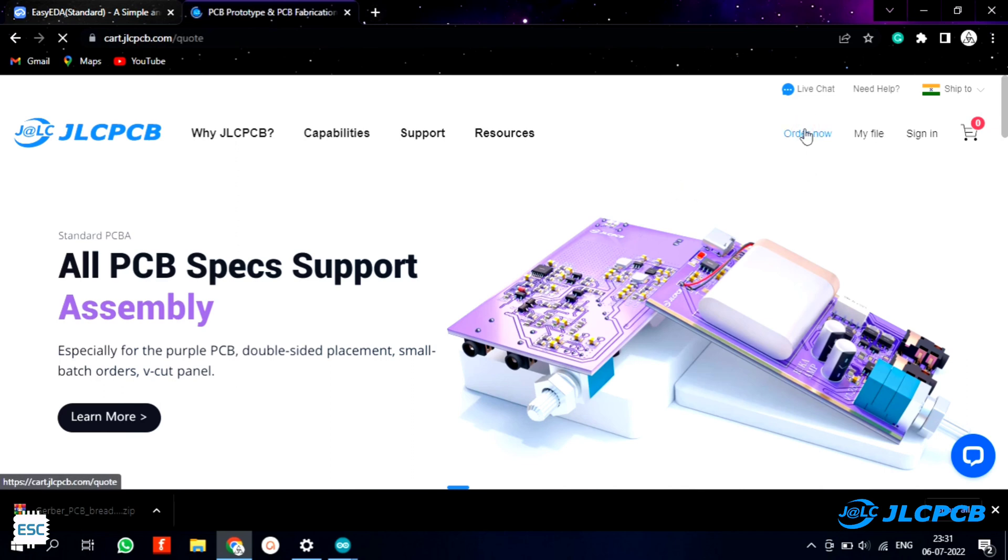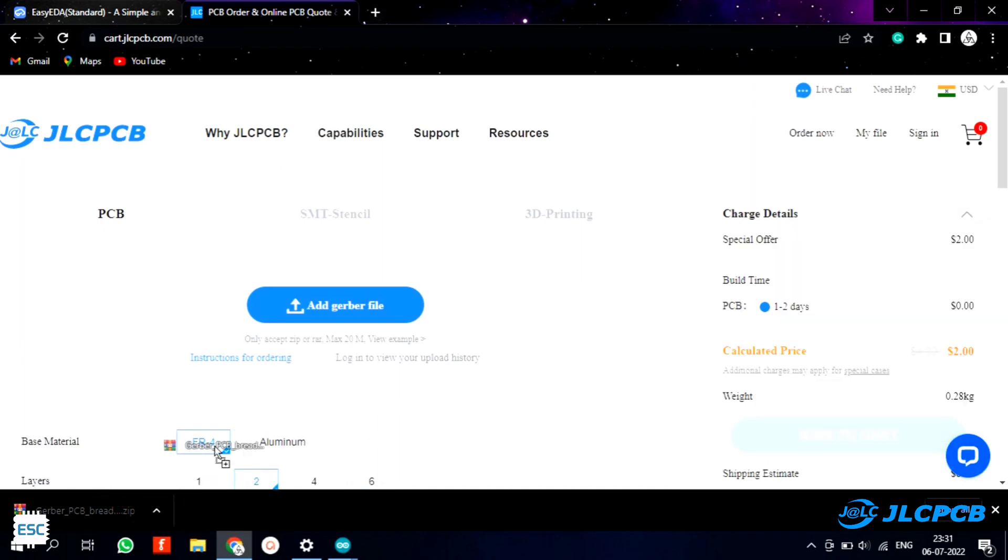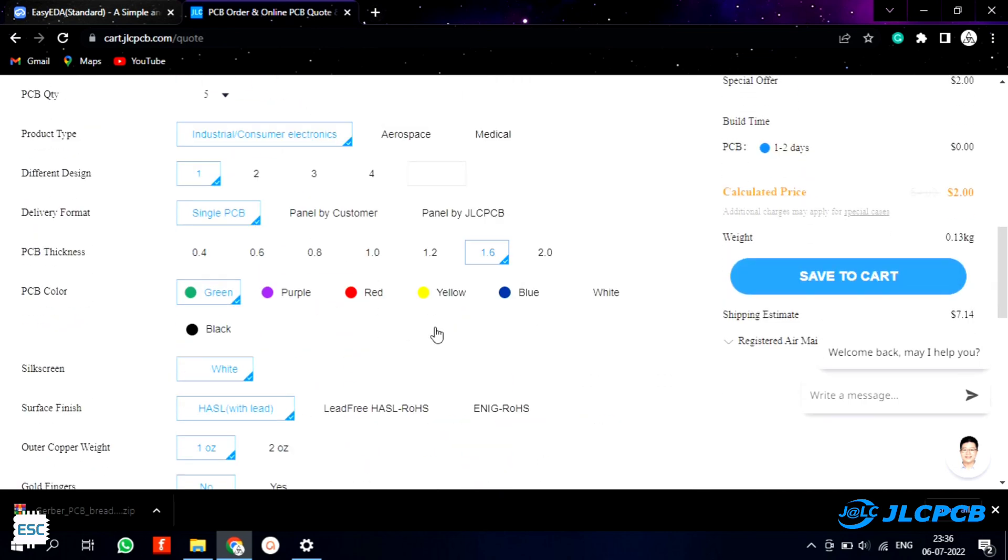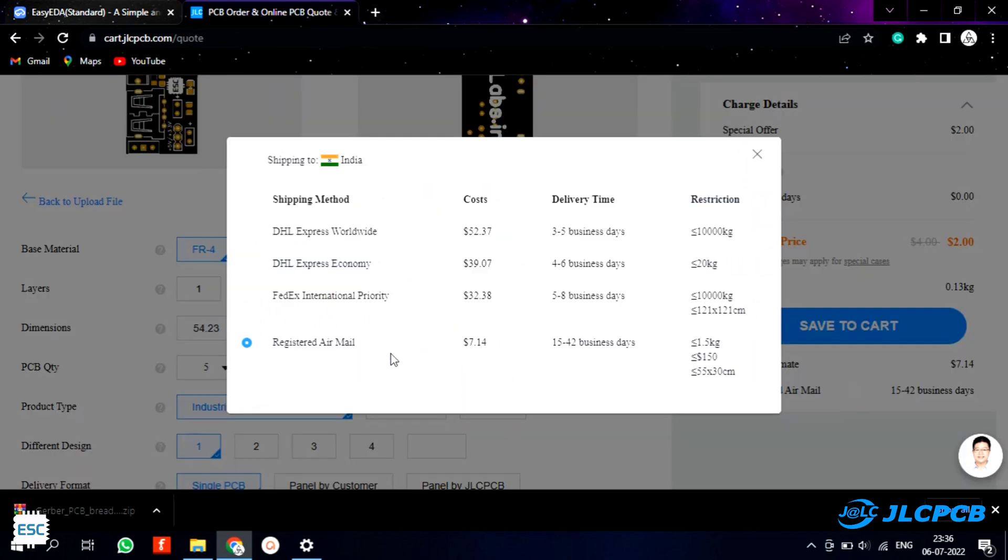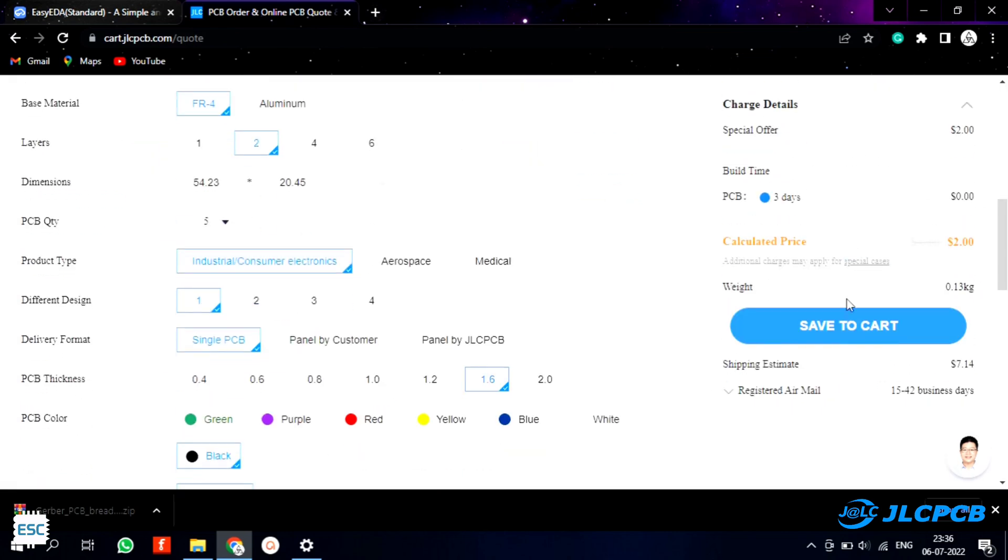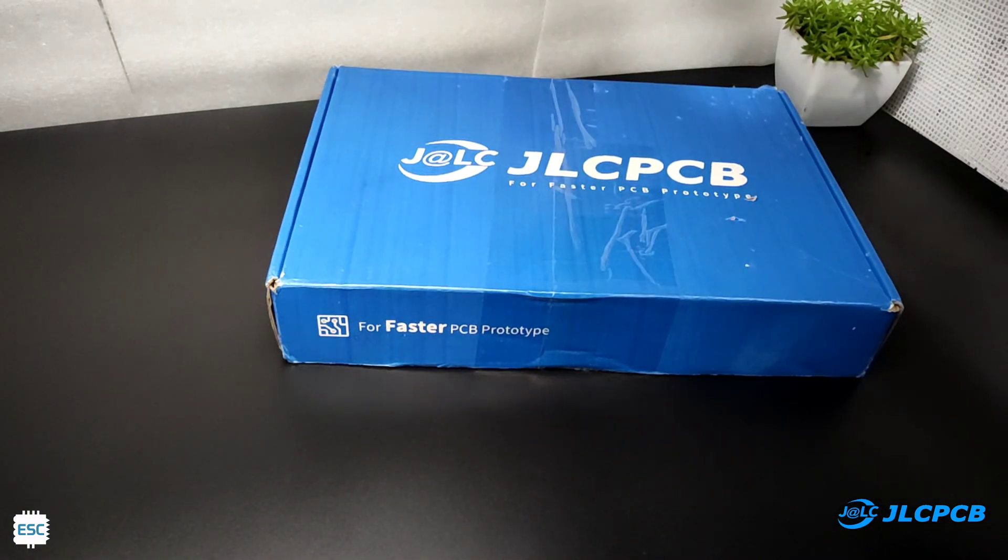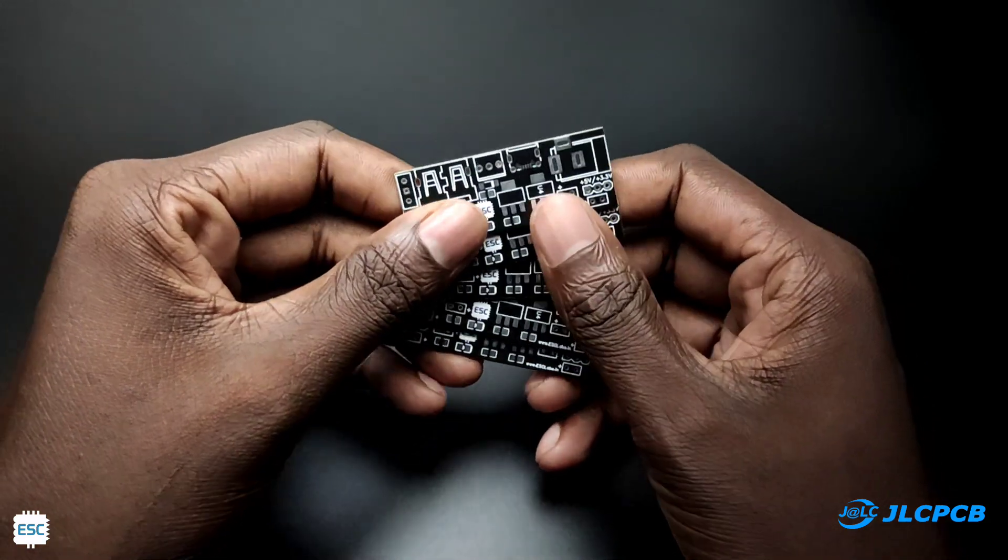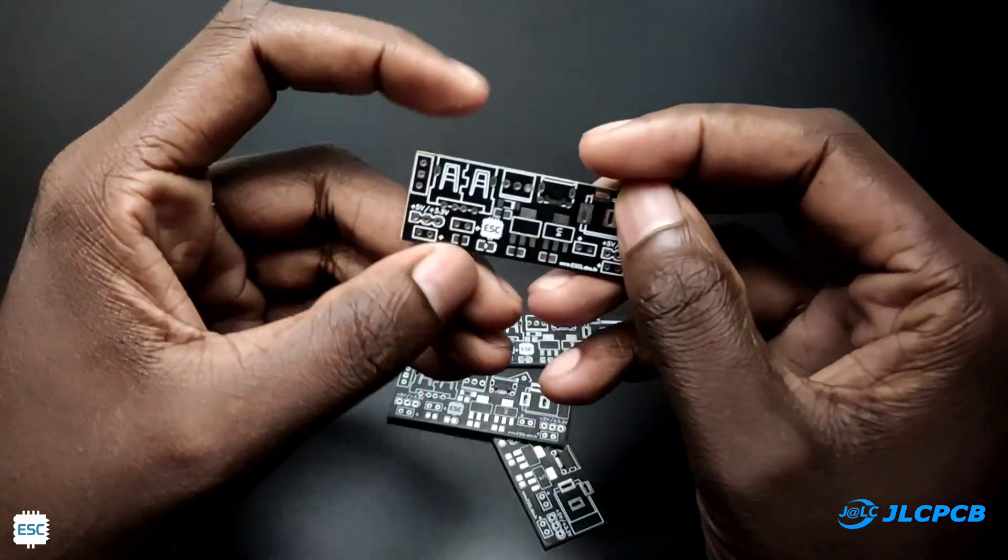To order PCBs just click on order now and upload the Gerber file. After uploading, select the color and quantity. Here I chose black color and finally I chose shipping method and placed the order. After 2 weeks I received the blue pack from JLCPCB. Here are our PCBs and see the black color is nice and the PCB quality is super.